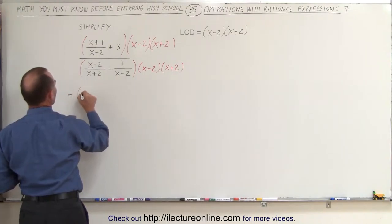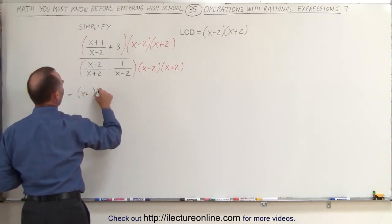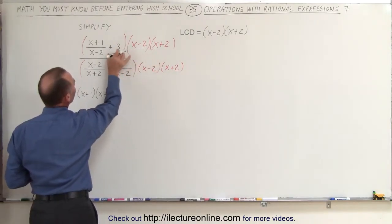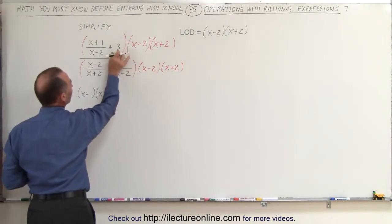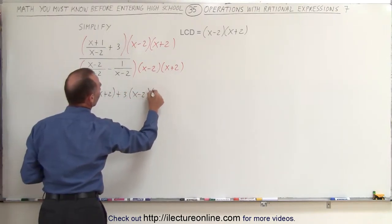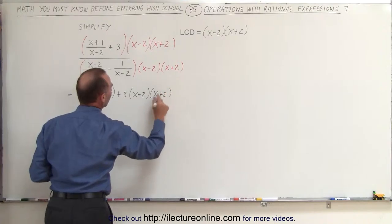This is equal to x plus 1 times x plus 2. Notice here we don't have anything in the denominator, so this simply becomes 3 times this product. So plus 3 times x minus 2 times x plus 2. There's nothing to eliminate here.